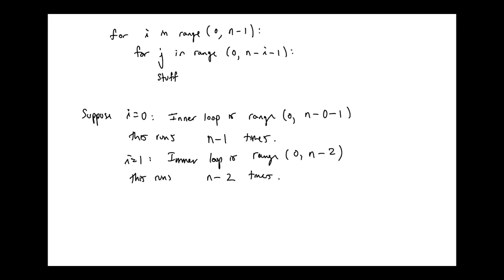So the pattern is: for i equals 0, the inner loop runs n minus 1 times; for i equals 1, it runs n minus 2 times; for i equals 2, it runs n minus 3 times; and so on down to just 1 time. The total number of inner loop iterations is the sum of all those values.